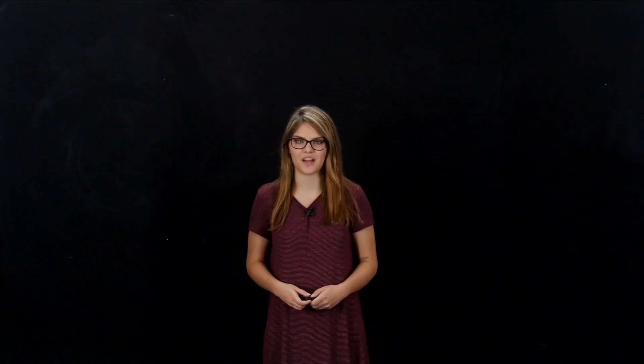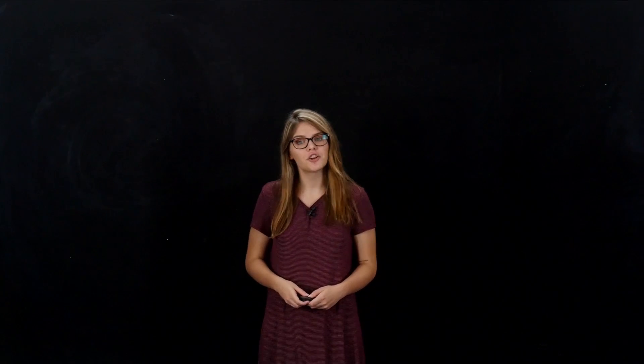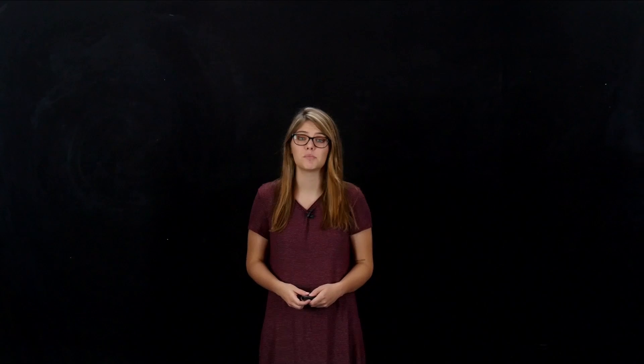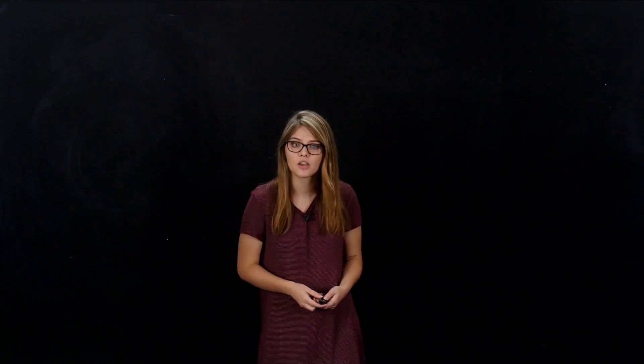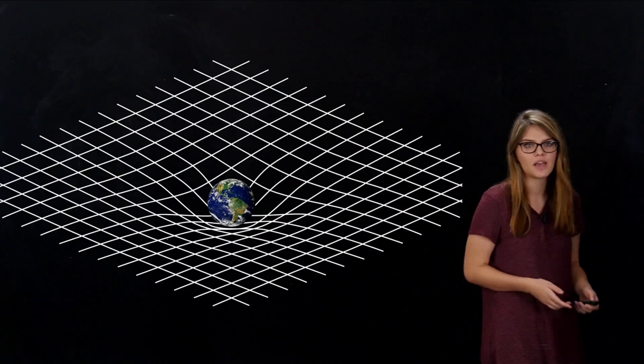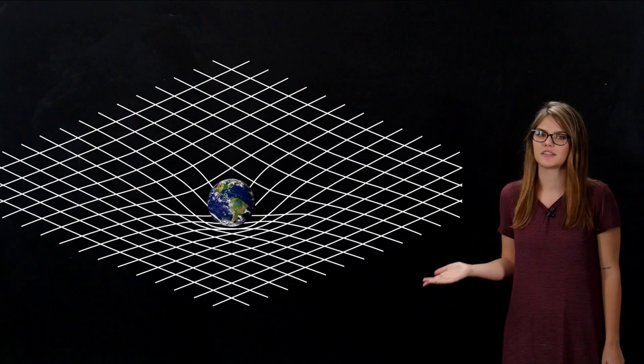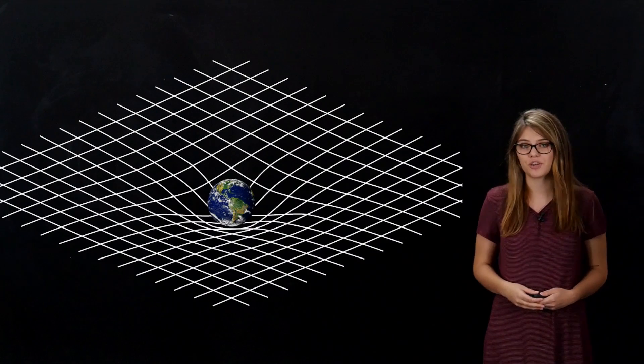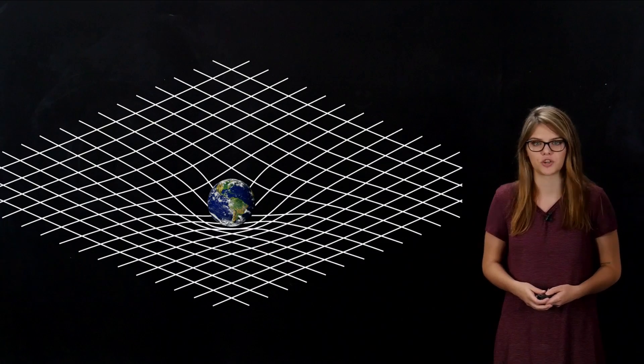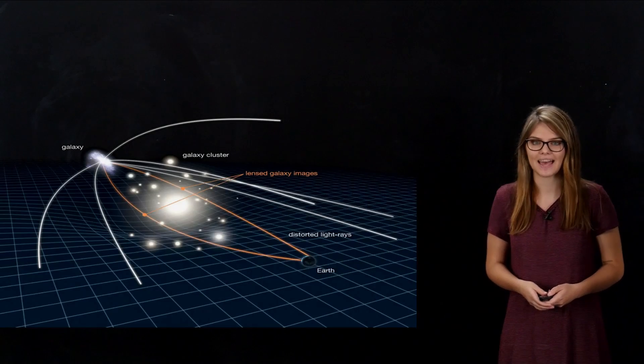Another form of observational evidence comes from a pretty cool effect predicted by Einstein's general theory of relativity. General relativity helps explain how gravity actually works and treats space-time as something that can be bent and distorted by the presence of mass. The more the mass, the stronger the curve. Here's a representation of the Earth bending the space-time around it. What's also pretty cool is that objects traveling through the universe will follow this curved path. One example of this is light.